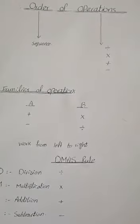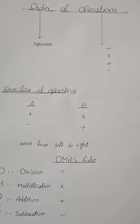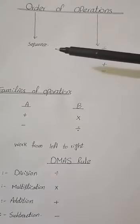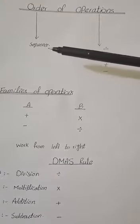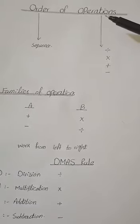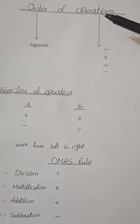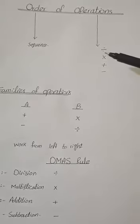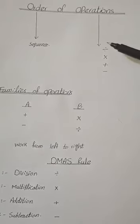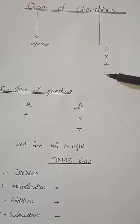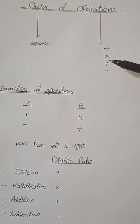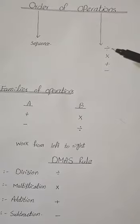Let's take an overview about the concept of Order of Operations. Order means sequence or arrangement — whose sequence? The sequence of operations. The operations in mathematics are division, multiplication, addition, and subtraction. We have these four operations in our questions, and in this topic we will learn about the sequence of these operations.